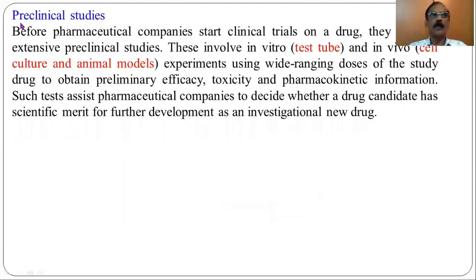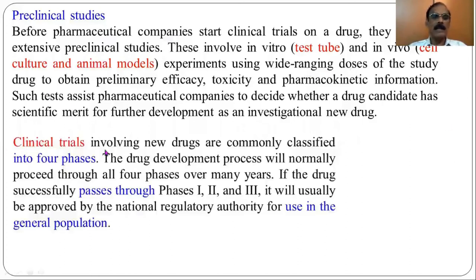Though there are four steps, three clinical studies involve test tube and cell culture and animal models experiments using wide-ranging doses of the study. The clinical trials involving new drugs are commonly classified into four phases. If the drug successfully passes through phases 1, 2 and 3, it will usually be approved by the National Regulatory Authority for use in the general population.